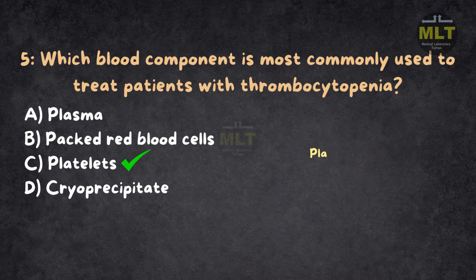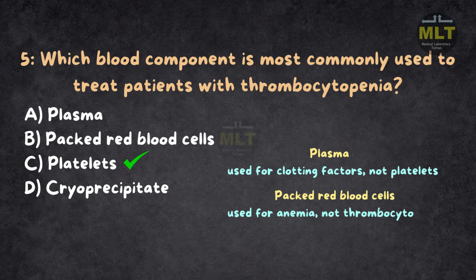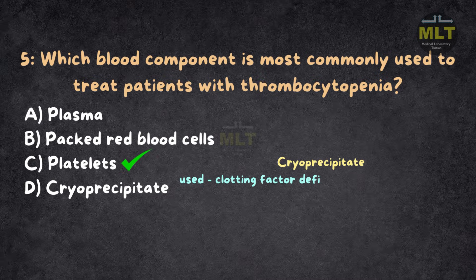Plasma is used for clotting factors, not platelets. Packed red blood cells are used for anemia, not thrombocytopenia. Cryoprecipitate is used for clotting factor deficiencies, not platelet count.